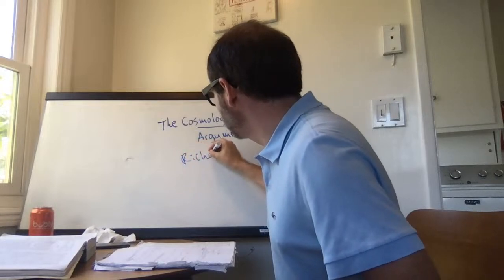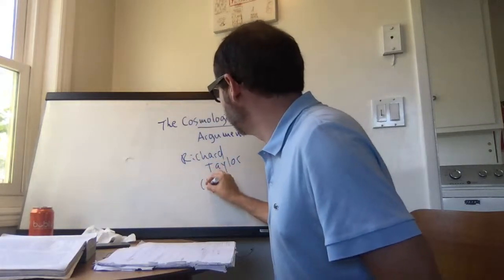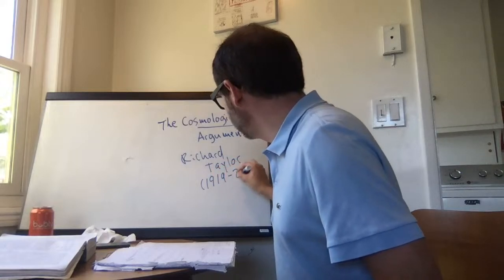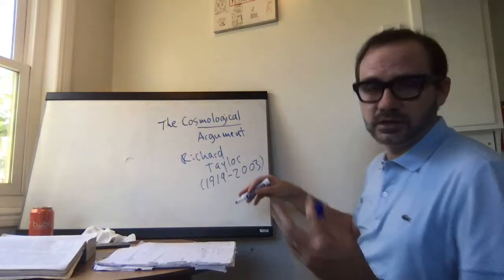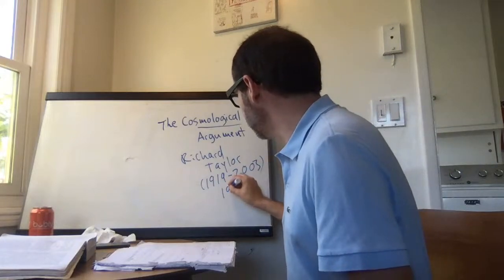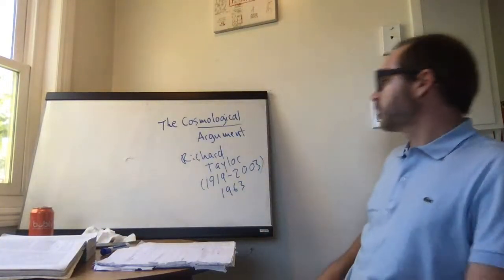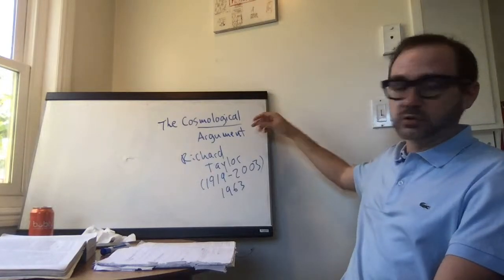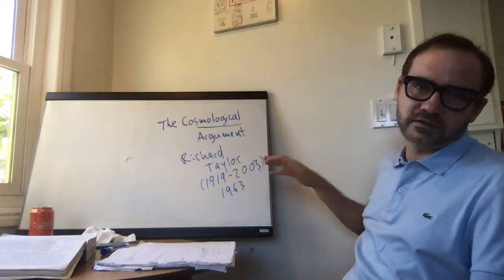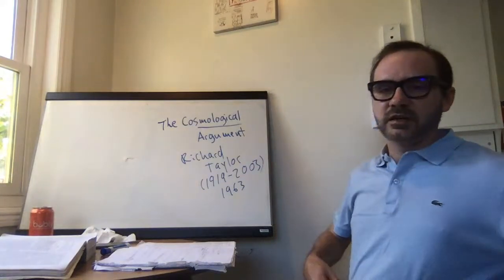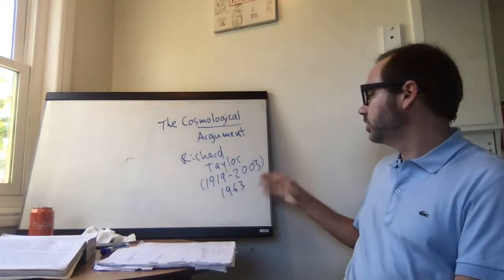We are looking at a version of the cosmological argument that was discussed and described by a more contemporary and modern author — Richard Taylor. He is a 20th century American philosopher who lived from 1919 until 2003. We're looking at a presentation of the cosmological argument that he wrote, which comes from 1963. This argument is much older than this man, but he wrote about it in 1963, giving us a slightly more modernized discussion of an argument that has really ancient roots.